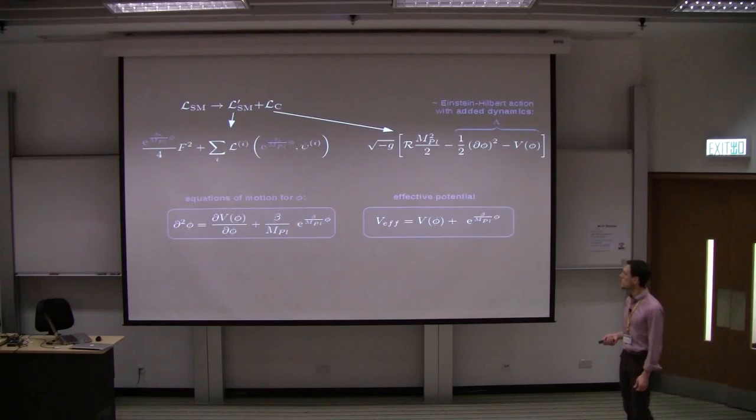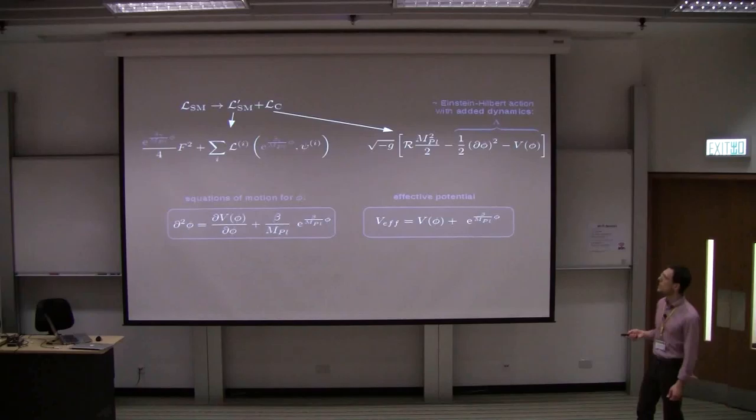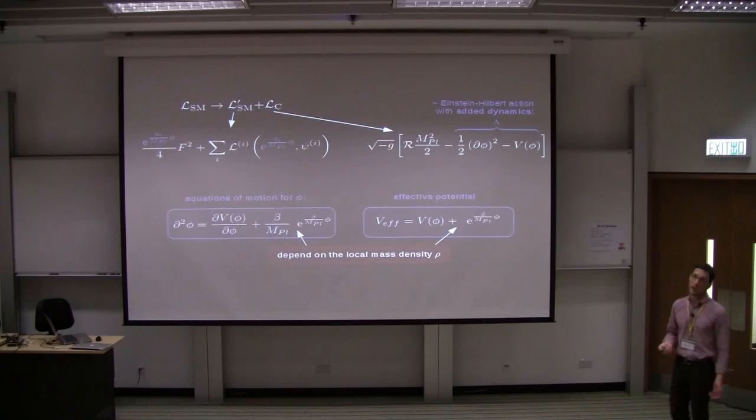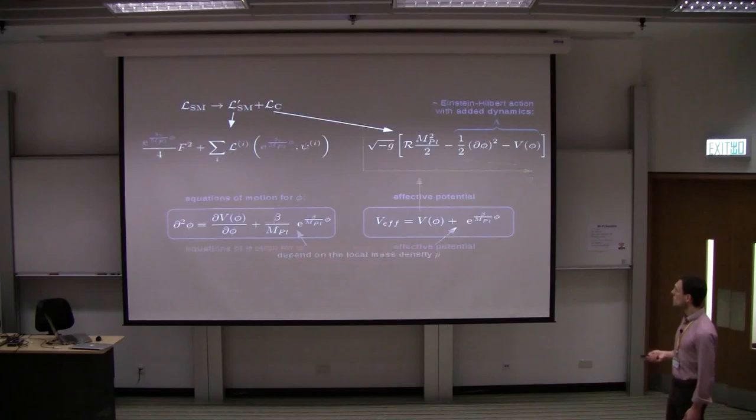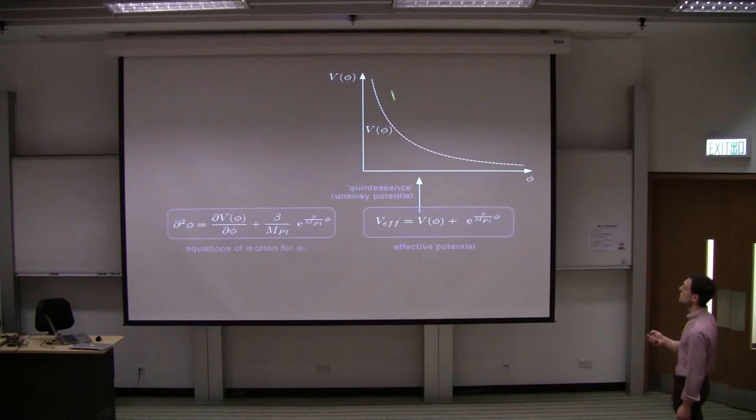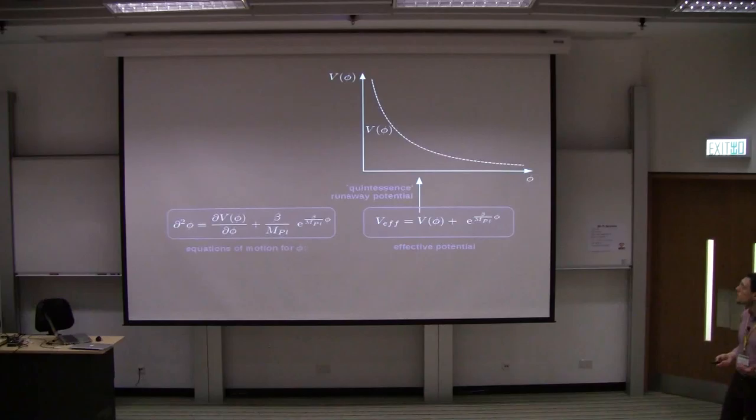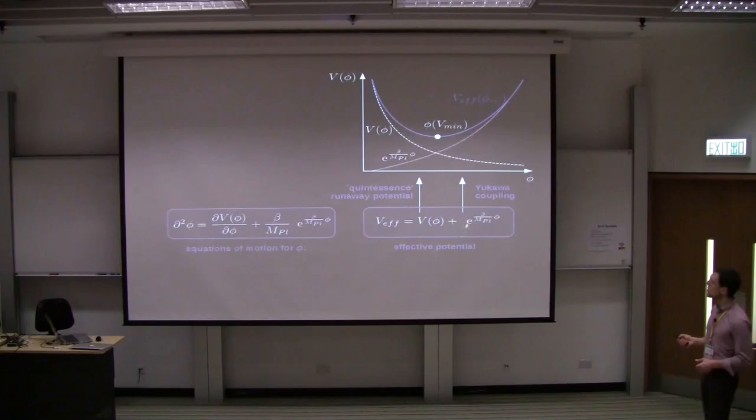Well, what you can do then is clear. You can derive the equations of motion for the field and you see that they take a particularly simple form if you define an effective potential. But the most important part here to notice is that both of them depend on the mass density or energy density in which you are. And that is quite peculiar about this model. If we have a closer look at the effective potential, it contains a runaway potential, like quintessence, which basically creates the acceleration. And then we have these Yukawa couplings. And because they add up, we have an effective potential which has a minimum.